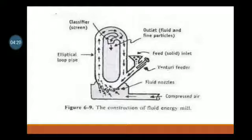This is the diagram of construction and working of fluid energy mill. It consists of an elliptical loop pipe, classifier screen, then outlet for fluid and fine particles. On the right side is the feed inlet where solid can enter. Then venturi feeder, at bottom fluid nozzles with compressed air.